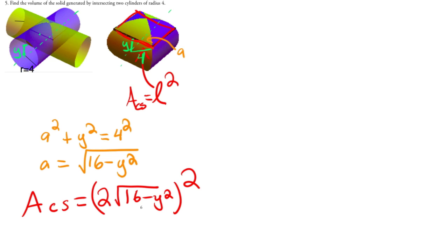So the full length of the square is 2A. So 2 times this guy, and then length times length is length squared. So then this is equal to 4 times 16 minus y squared.